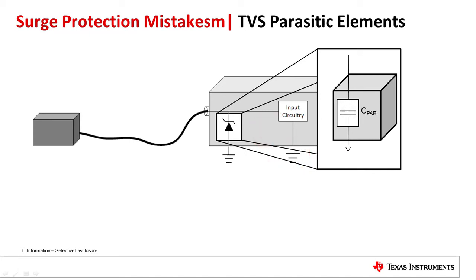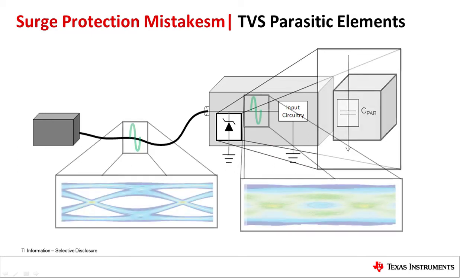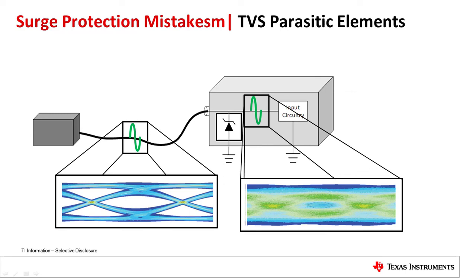TVS capacitances can be large as well, often higher than a nanofarad. While higher capacitance is acceptable in some applications, for communication lines this can attenuate the signal and destroy a required eye diagram. Before selecting a TVS diode, look at the parasitic elements and ensure they are acceptable in your system.